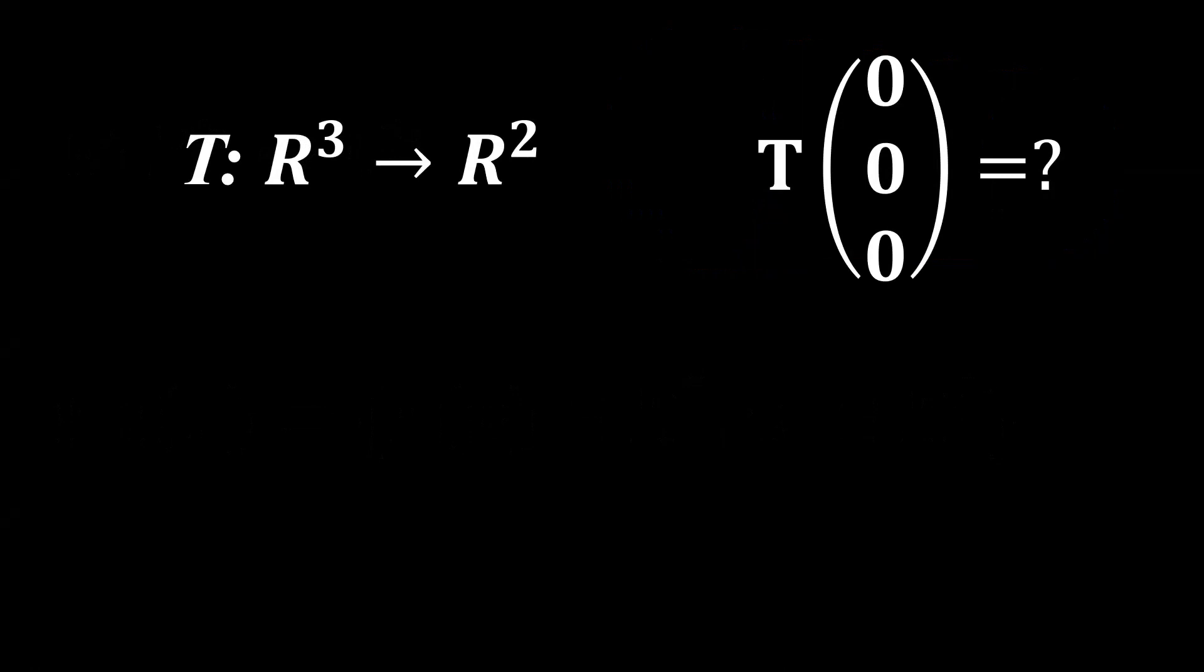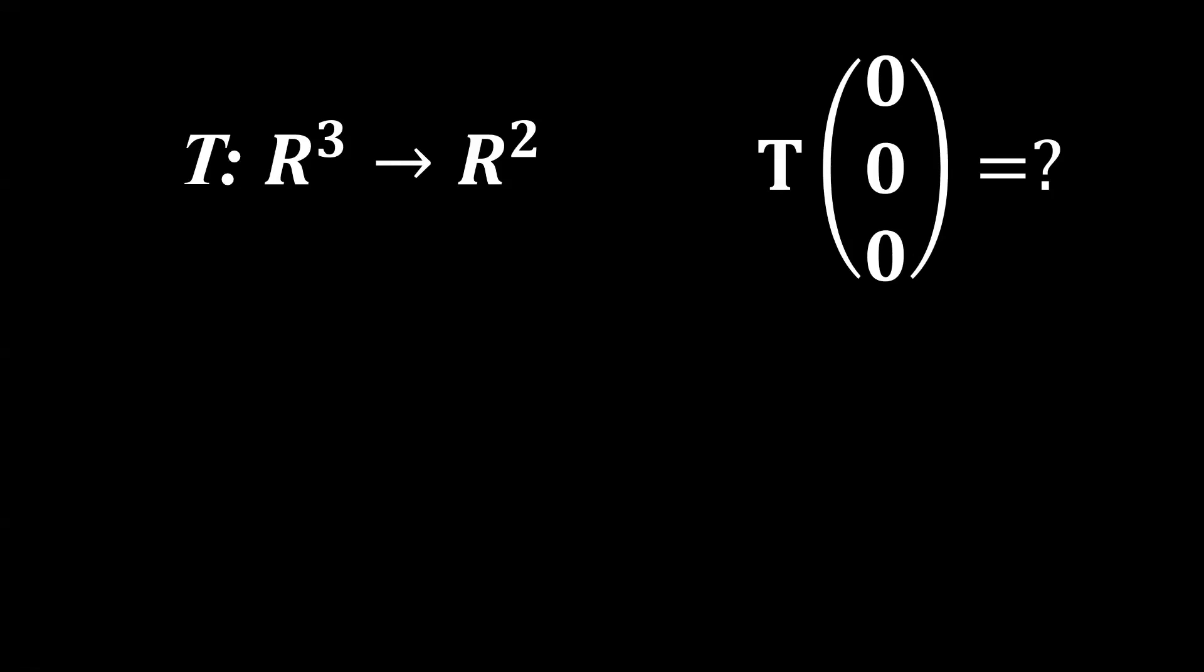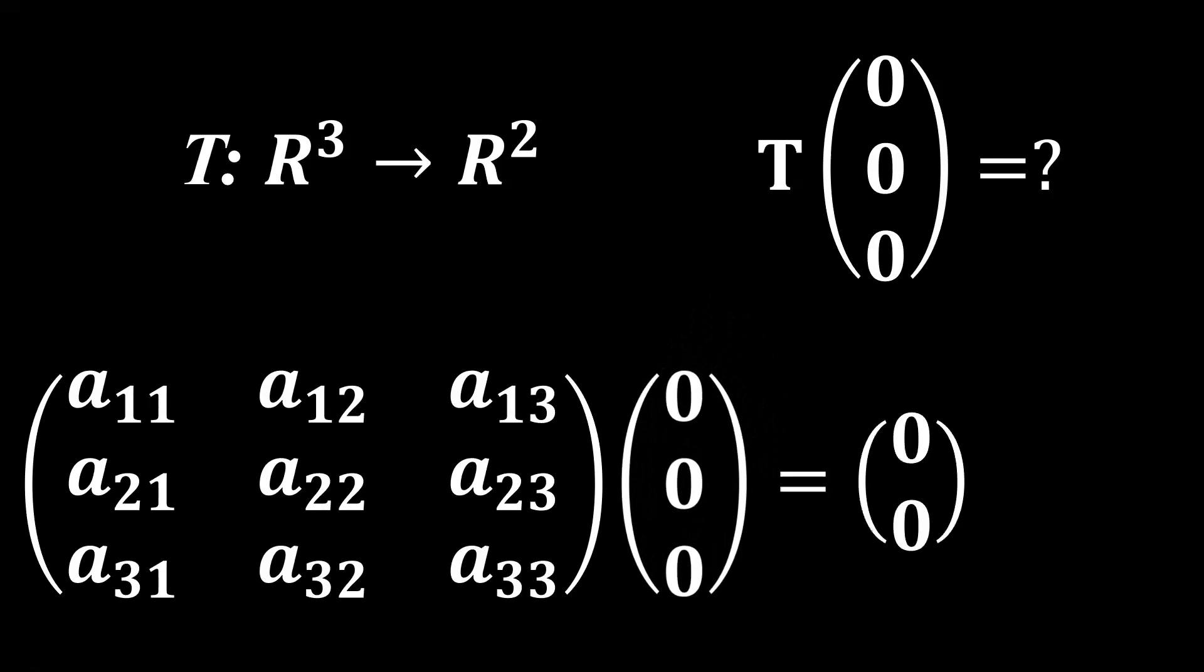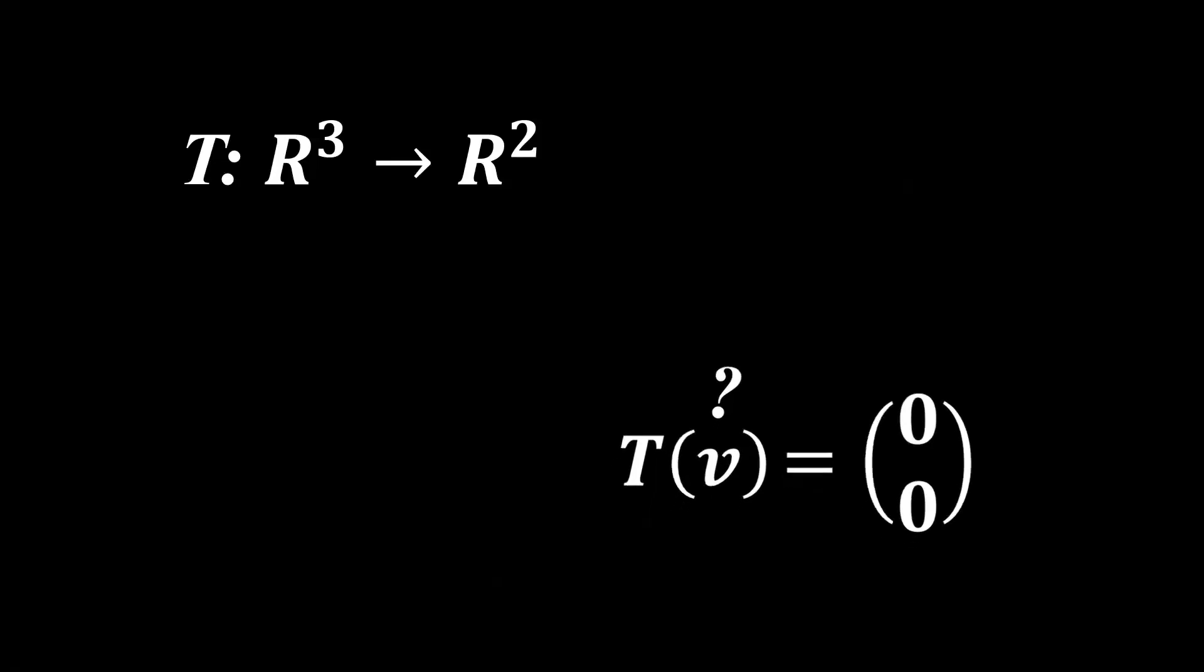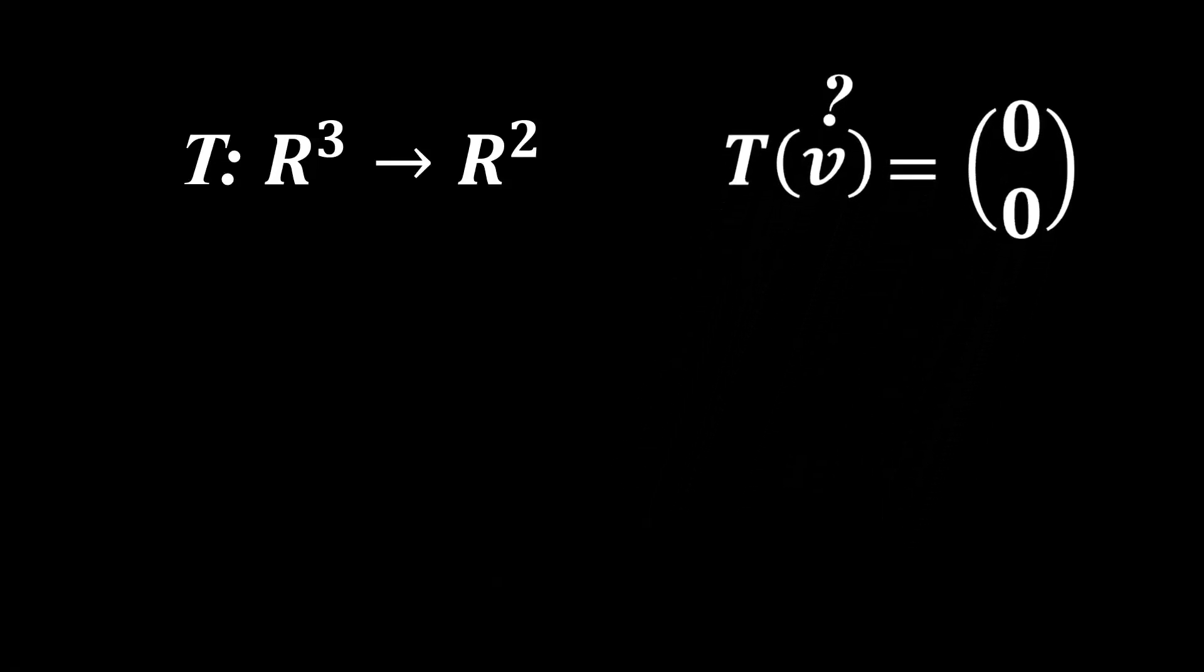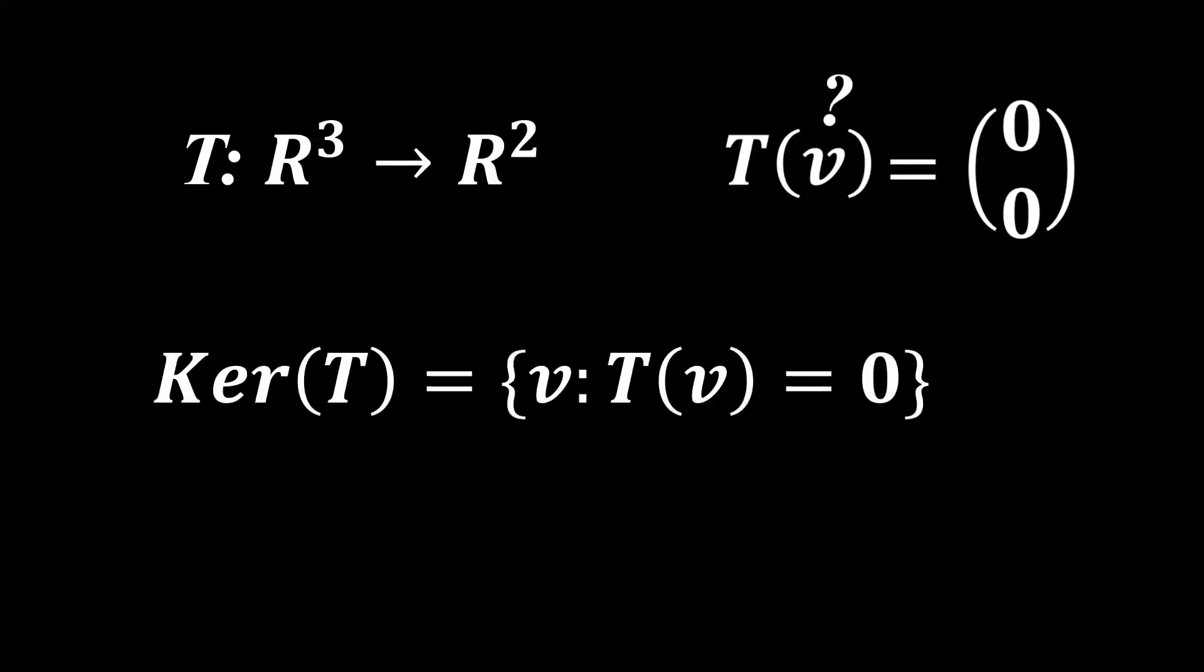Trivially, we can tell that the zero vector in R3 is going to be one of the vectors that are mapped to the zero vector in R2. That's due to matrix vector multiplication. Yet, we want to search for other vectors. And it turns out that for every linear transformation, there is a subspace of its domain that collects all of the vectors that are mapped to the zero vector.